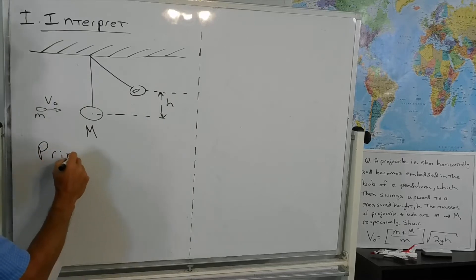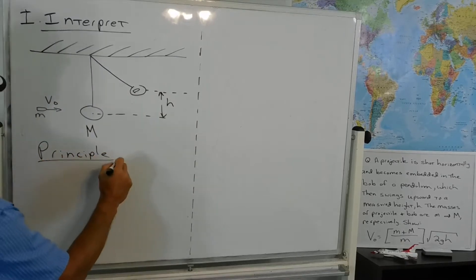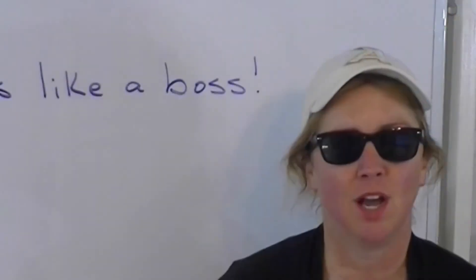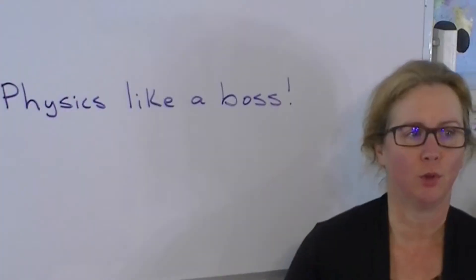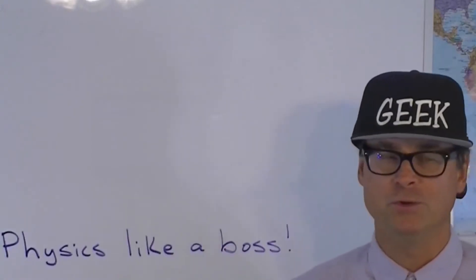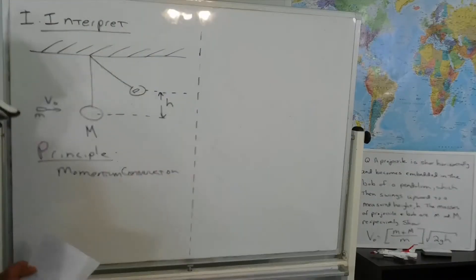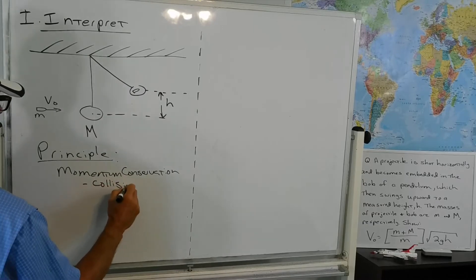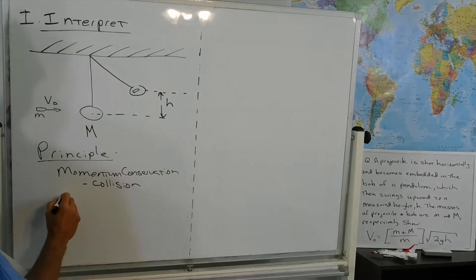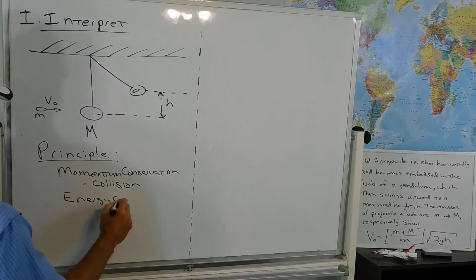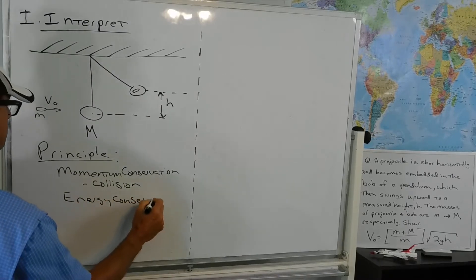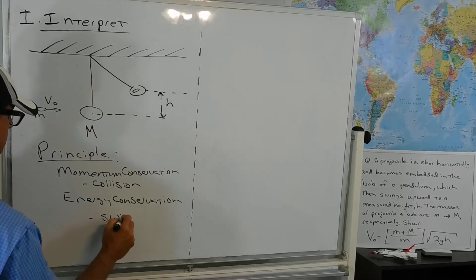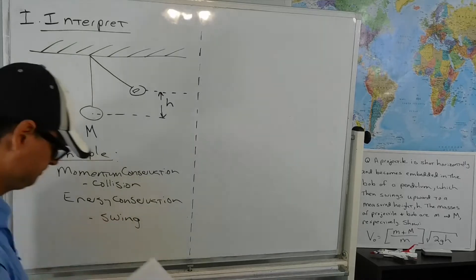So we've got two principles of physics here. One is conservation of momentum. God has crowned you with glory and honor to rule over his creation. We're going to use conservation of momentum. That's important in analyzing the collision. And then we also have energy conservation. Energy conservation is useful and important for analyzing the swing.